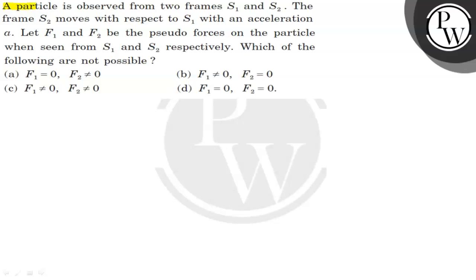Let's read the question: a particle is observed from two frames S1 and S2. The frame S2 moves with respect to S1 with an acceleration a. Let F1 and F2 be the pseudo forces on the particle when seen from S1 and S2 respectively. Which of the following are not possible? We will explain the question with a diagram.